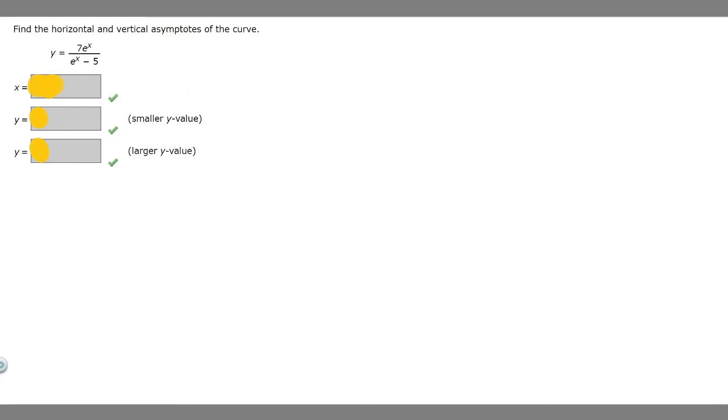So in this problem we're told to find the horizontal and vertical asymptotes of the curve. We're told that y equals 7e to the x over e to the x minus 5.